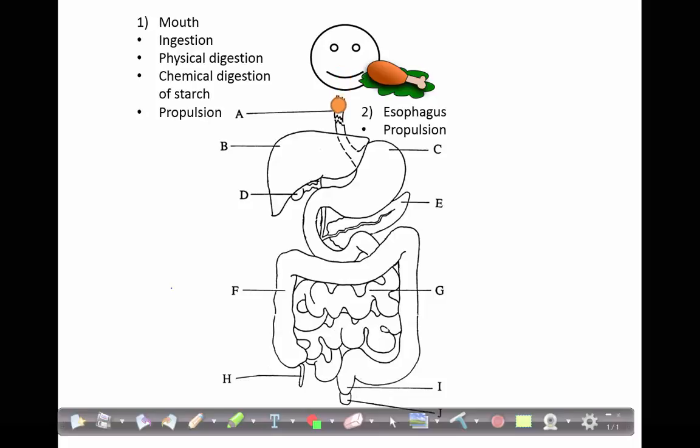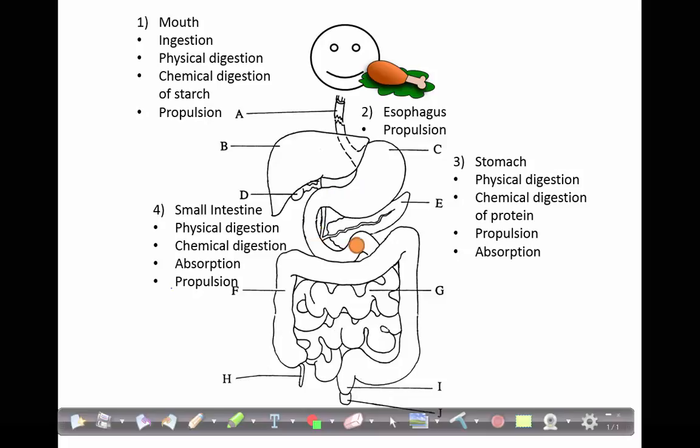First we start at the mouth, then the particles go through the esophagus, the stomach, into the small intestine, then the large intestine, and then stored in the rectum and out the anus, which are part of the large intestine.